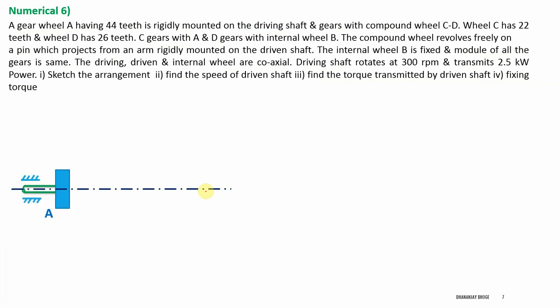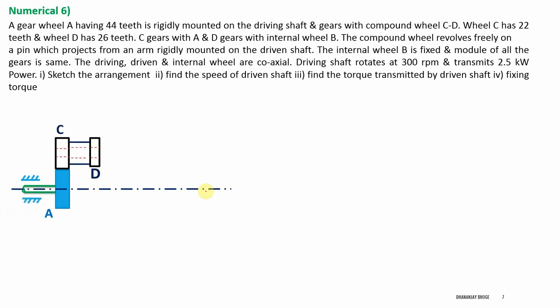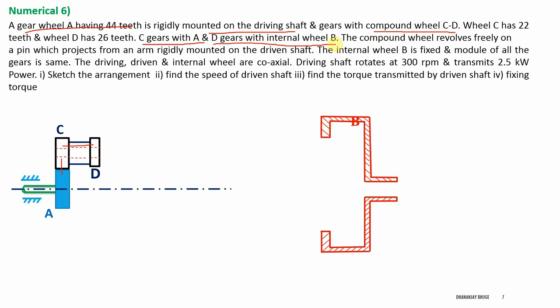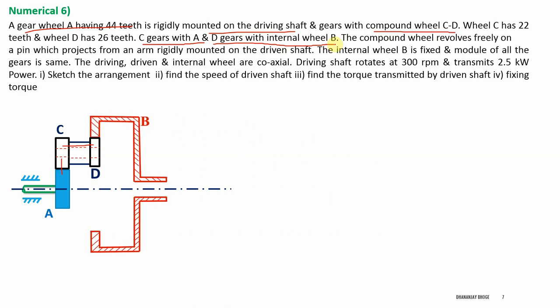Gear A is mounted on the driving shaft. Gear A is in mesh with gear C, and C is compounded with gear D — they are on the same shaft. C gears with A, and D gears with internal wheel B. So let us draw the internal gear B, which is in mesh with wheel D.